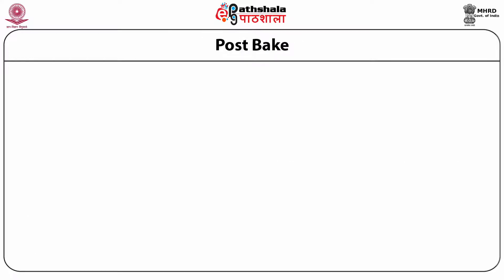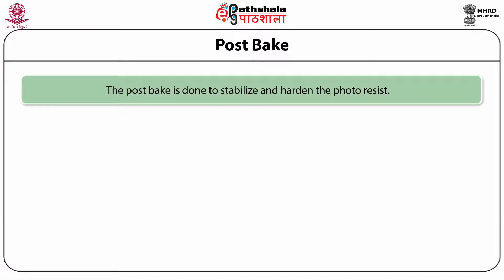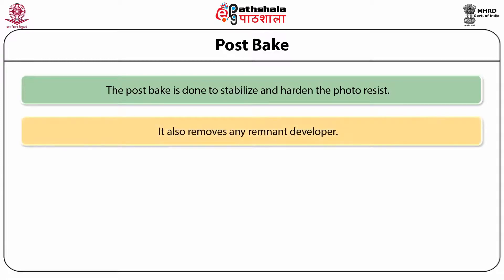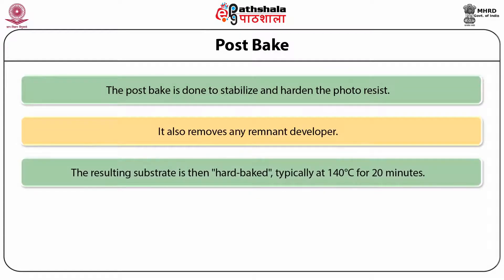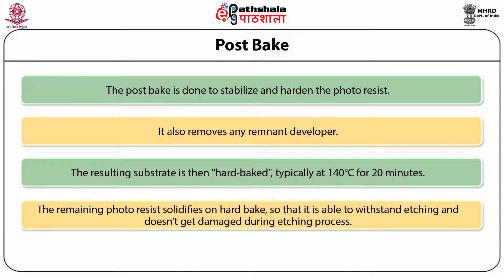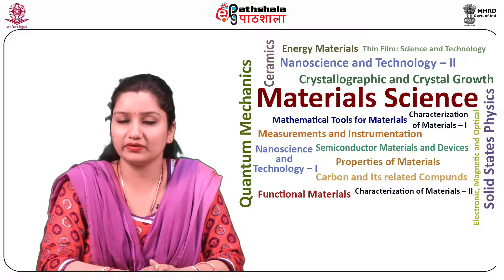The next step is post-bake. The post-bake is done to stabilize and harden the photoresist and also removes any remnant developer. The resulting substrate is then hard-baked typically at 140 degrees Celsius for 20 minutes. The remaining photoresist solidifies on hard-bake so that it is able to withstand etching and does not get damaged during the etching process.